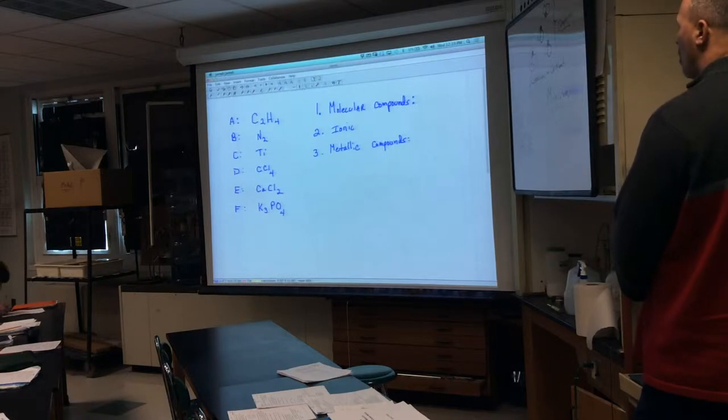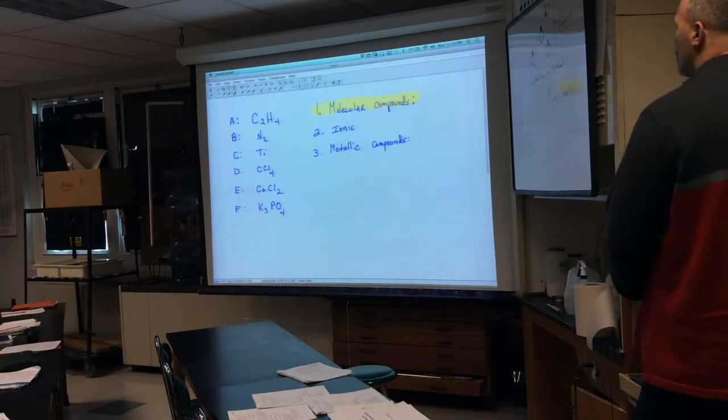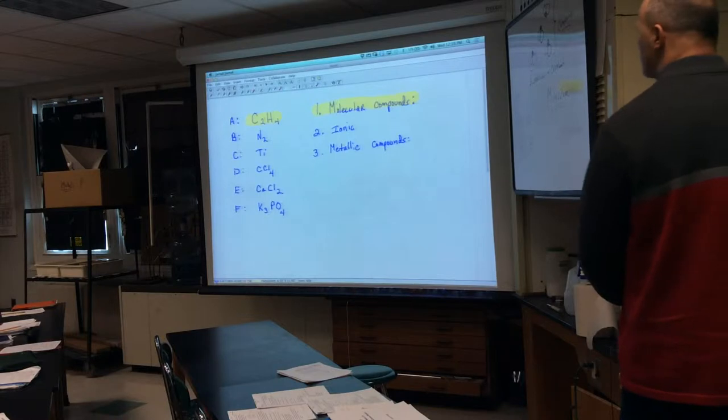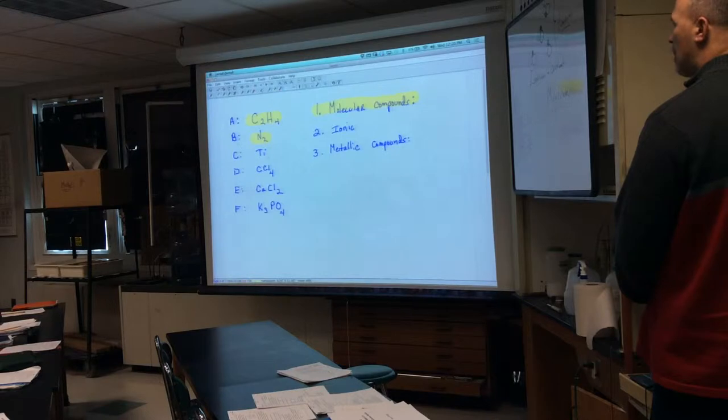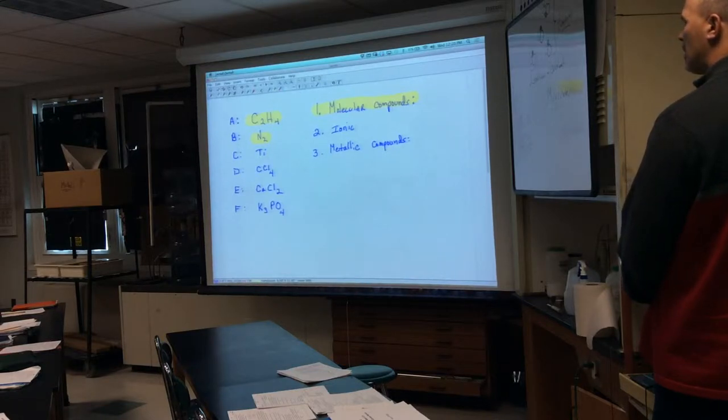So if you look at your reference table, carbon's a non-metal, hydrogen's a non-metal. So my molecular compounds are things that are bonded covalently, non-metal, non-metal. My C and my H. N bonding to itself. That's a non-metal bonded to a non-metal. How about D? How about C? What do you think about C? Titanium.